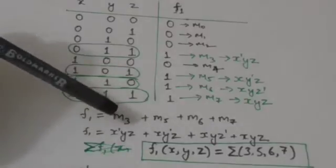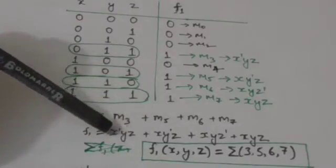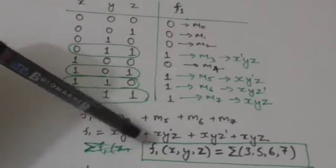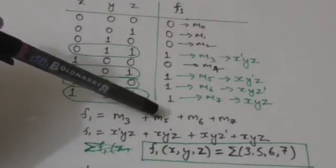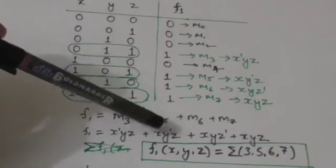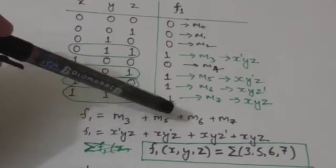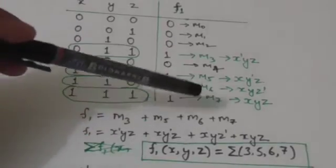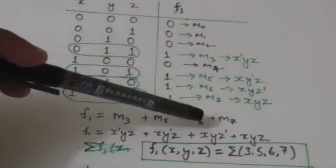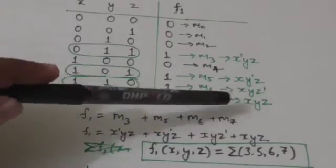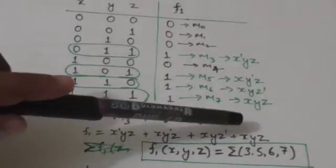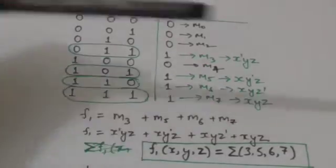Here, m3 corresponds to x-complement, y, z. m5 corresponds to x, y-complement, z. m6 corresponds to x, y, z-complement. And m7 corresponds to x, y, z.